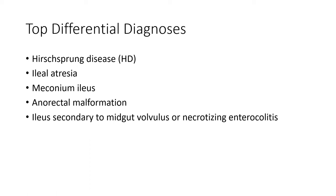Top differential diagnoses include: colonic atresia, meconium ileus, anorectal malformation, and atresia secondary to midgut volvulus or necrotizing enterocolitis.